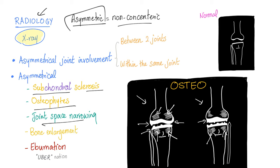The joint space narrowing is asymmetrical both between the right and left knee, and within the same joint itself — narrower on one side than the other. We also find bone enlargement due to the osteophytes, and eburnation — the ivory bones — which we discussed in the pathophysiology of osteoarthritis video.